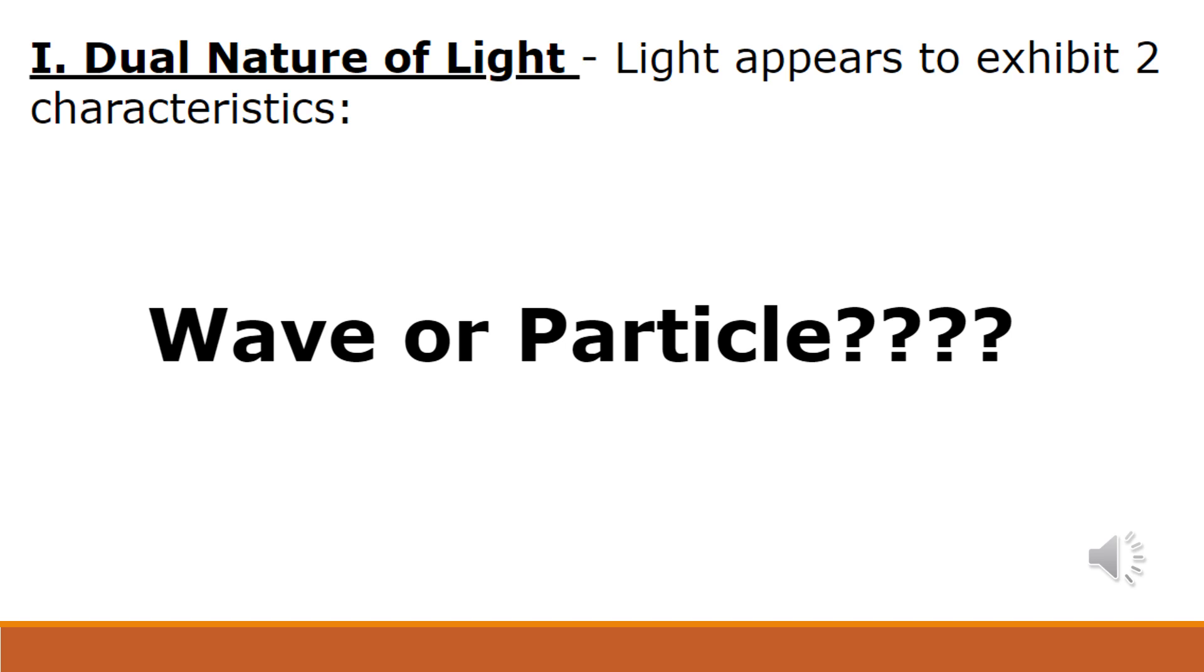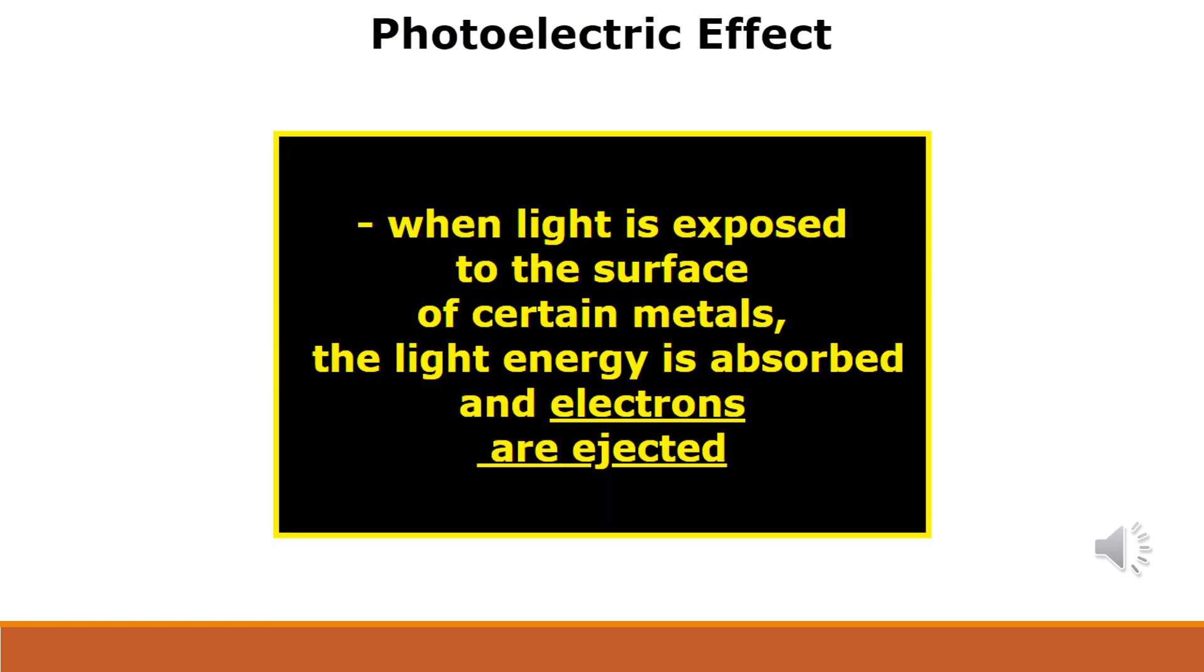At the end of the 19th century, an experiment called the photoelectric effect caused scientists to rethink the wave model of light. In this experiment, a metal exposed to UV light caused the emission of electrons. When the scientist changed the brightness and frequency of the light, he got results that the entire physics community could not explain.